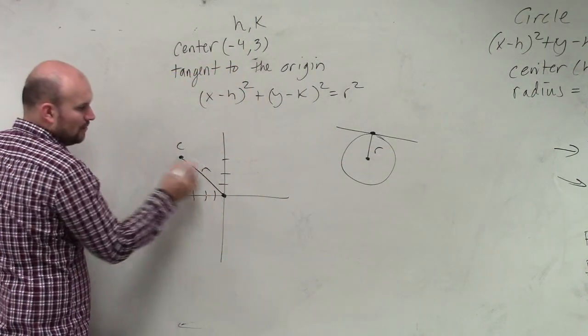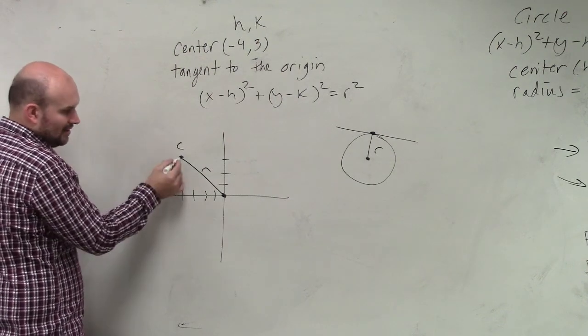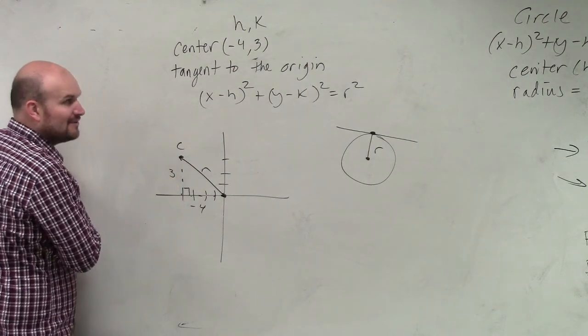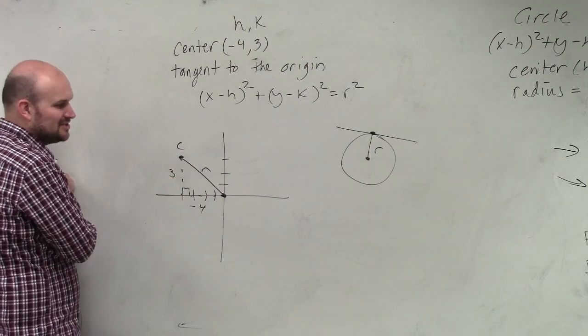So now, do I know what that r is? Well, if x is negative 4 and this is 3, I know my radius has to be my Pythagorean triple, which is 5.